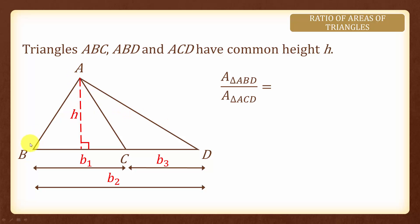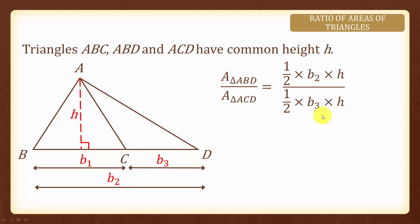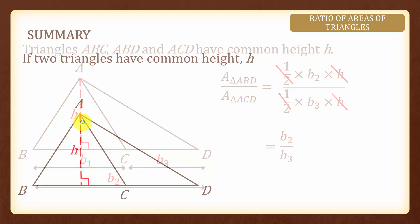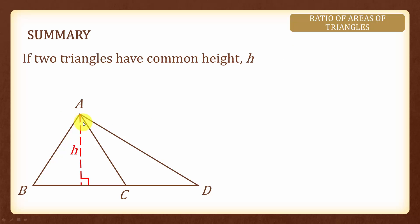Finally, area of triangle ABD over area of triangle ACD will simplify to B2 over B3, which is the base of triangle ABD over the base of triangle ACD. Note that the base here is the side perpendicular to the common height. In summary, when two triangles share a common height, A1 over A2 equals B1 over B2.